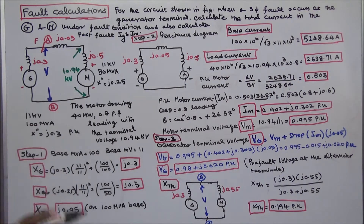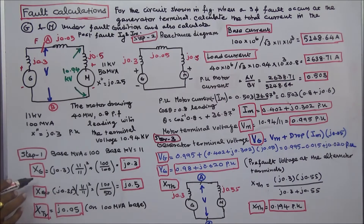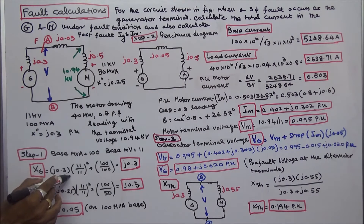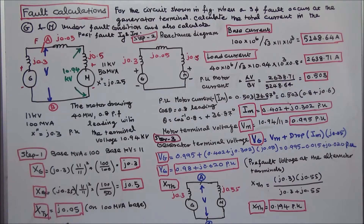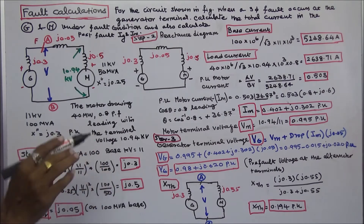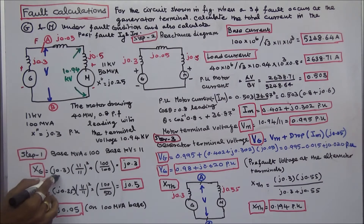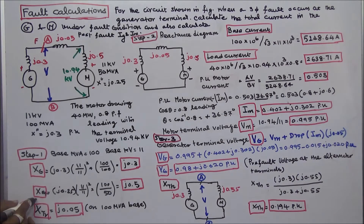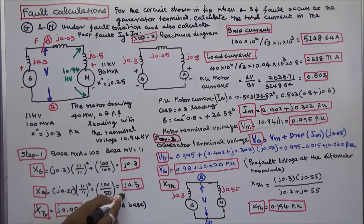Next we calculate the per-unit reactance of the generator and motor. Per-unit reactance of the generator is: given reactance J.3 multiplied by (V1/V2) squared, into SB2/SB1, where V1 is the given value, V2 is the chosen value, SB2 is the chosen value, SB1 is the given value. That gives J.3 × (11/11)² × (100/100) = J.3. Similarly, motor per-unit reactance is J.25 × (11/11)² × (100/50) = J.5.